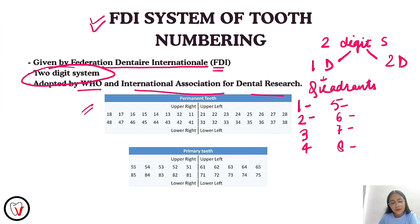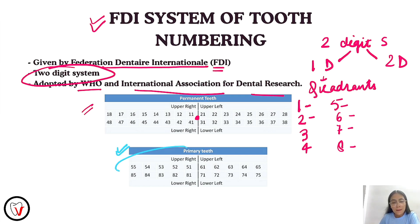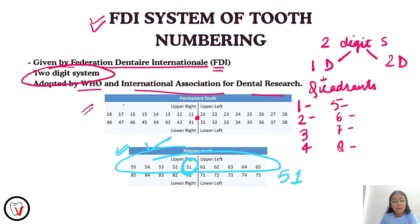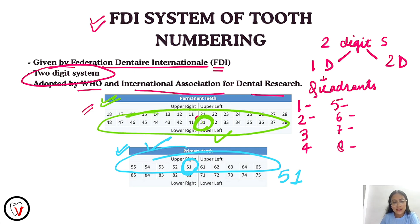The second digit represents the tooth number from the midline. For example, the primary maxillary right central incisor — we'll write it as 5, 1. Another example: the permanent mandibular left central incisor — we'll write it as 3, 1.